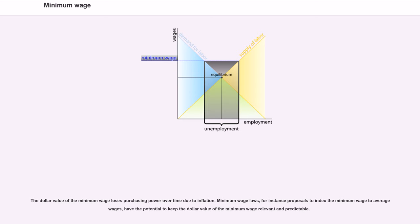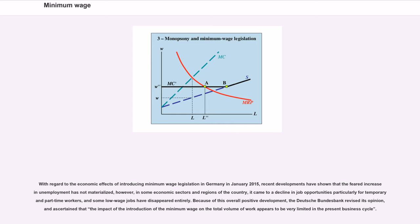The dollar value of the minimum wage loses purchasing power over time due to inflation. Minimum wage laws, for instance proposals to index the minimum wage to average wages, have the potential to keep the dollar value of the minimum wage relevant and predictable. With regard to the economic effects of introducing minimum wage legislation in Germany in January 2015, recent developments have shown that the feared increase in unemployment has not materialized. However, in some economic sectors and regions of the country, it came to a decline in job opportunities particularly for temporary and part-time workers, and some low-wage jobs have disappeared entirely. The Deutsche Bundesbank ascertained that the impact of the introduction of the minimum wage on the total volume of work appears to be very limited in the present business cycle.